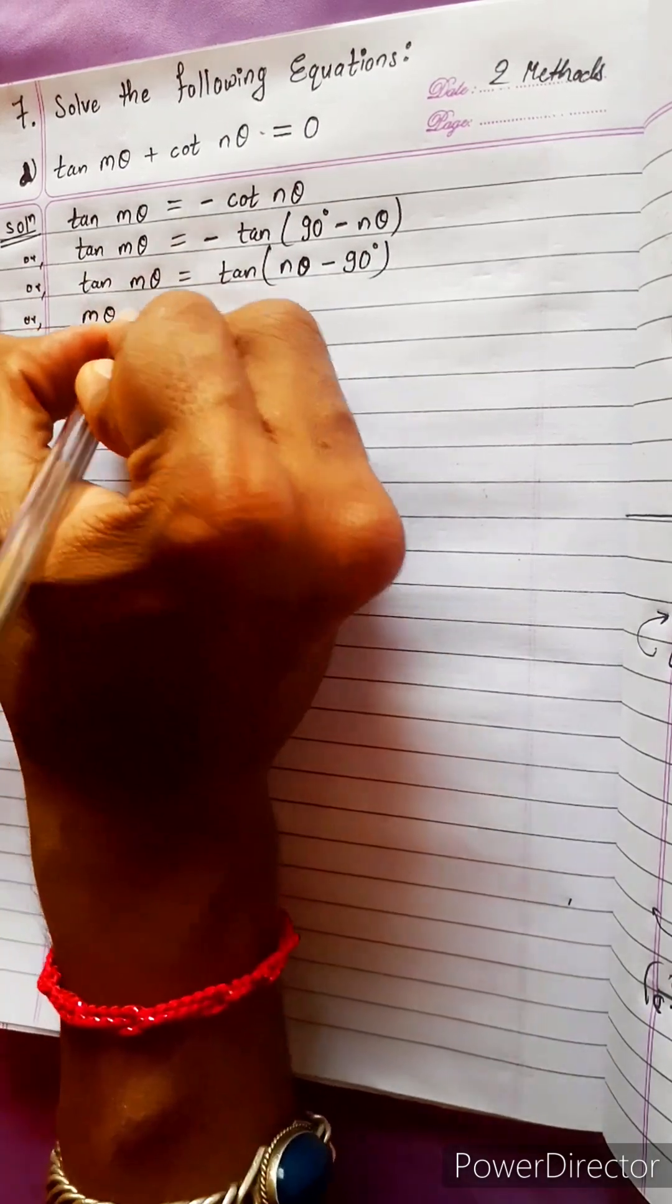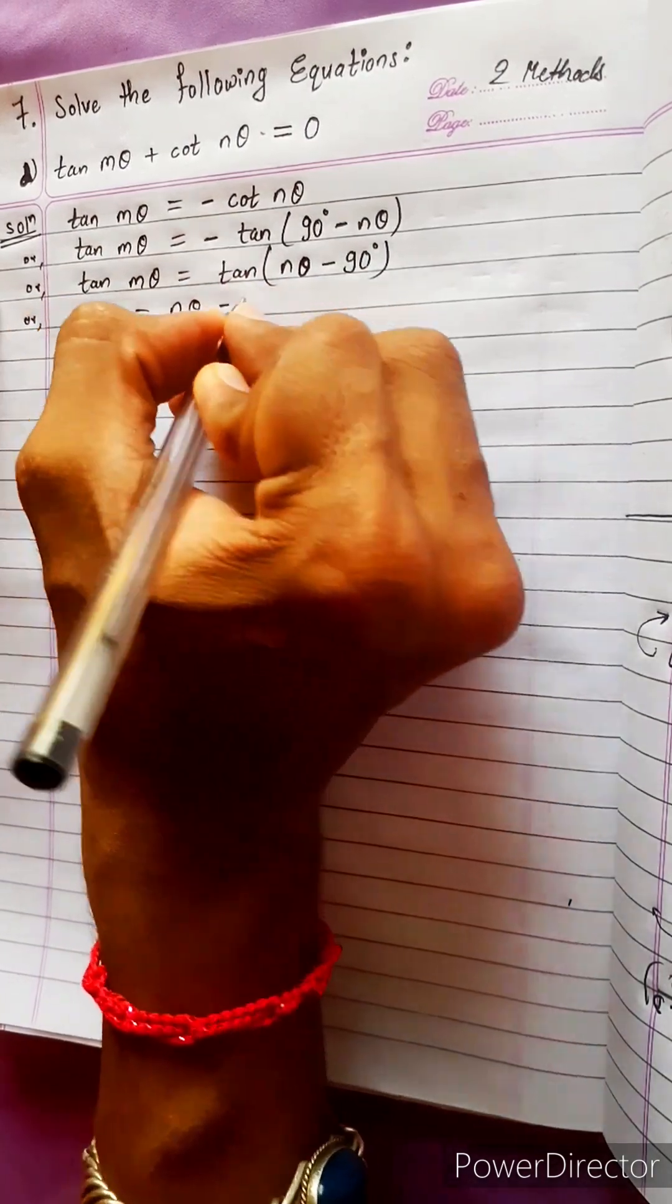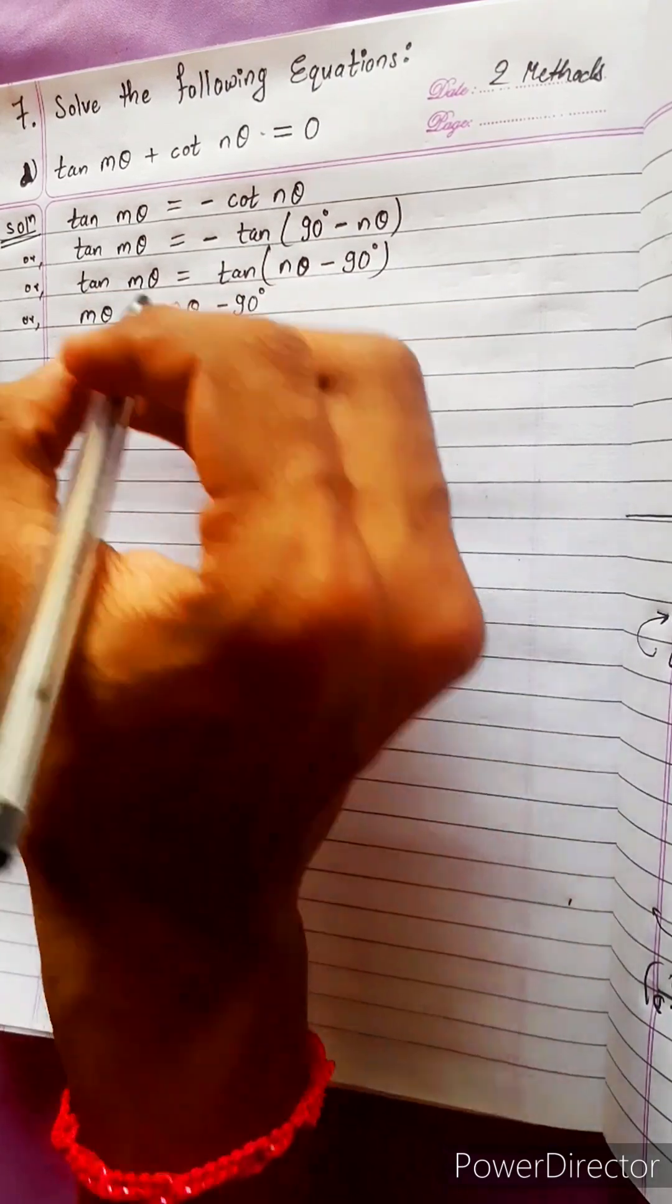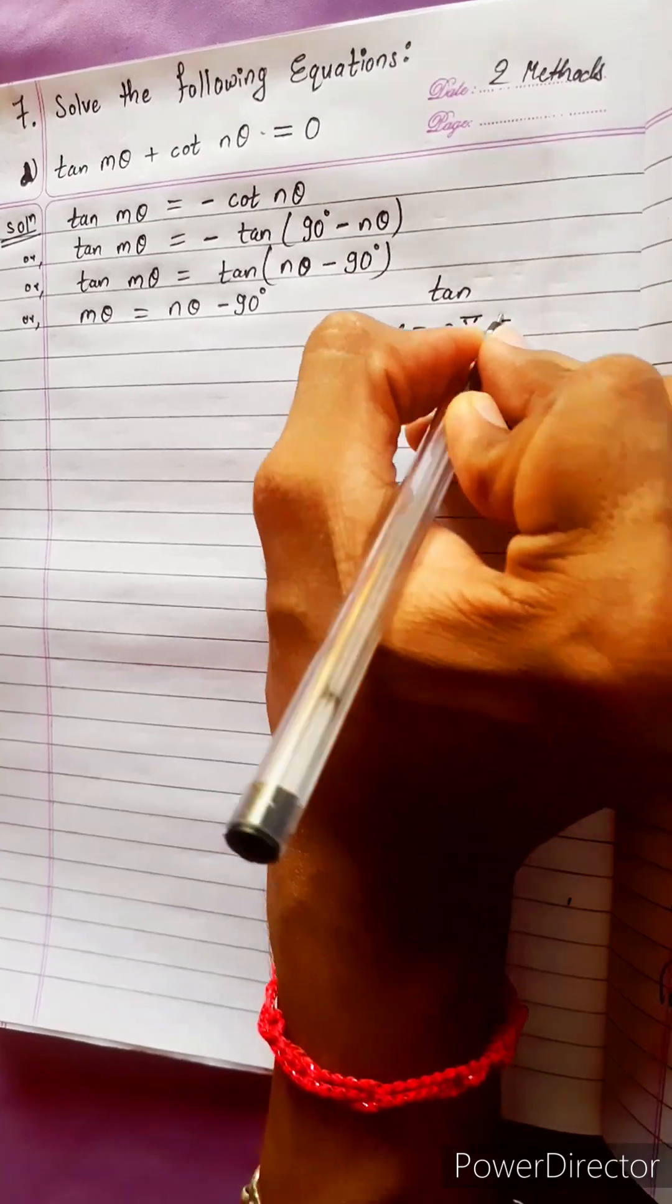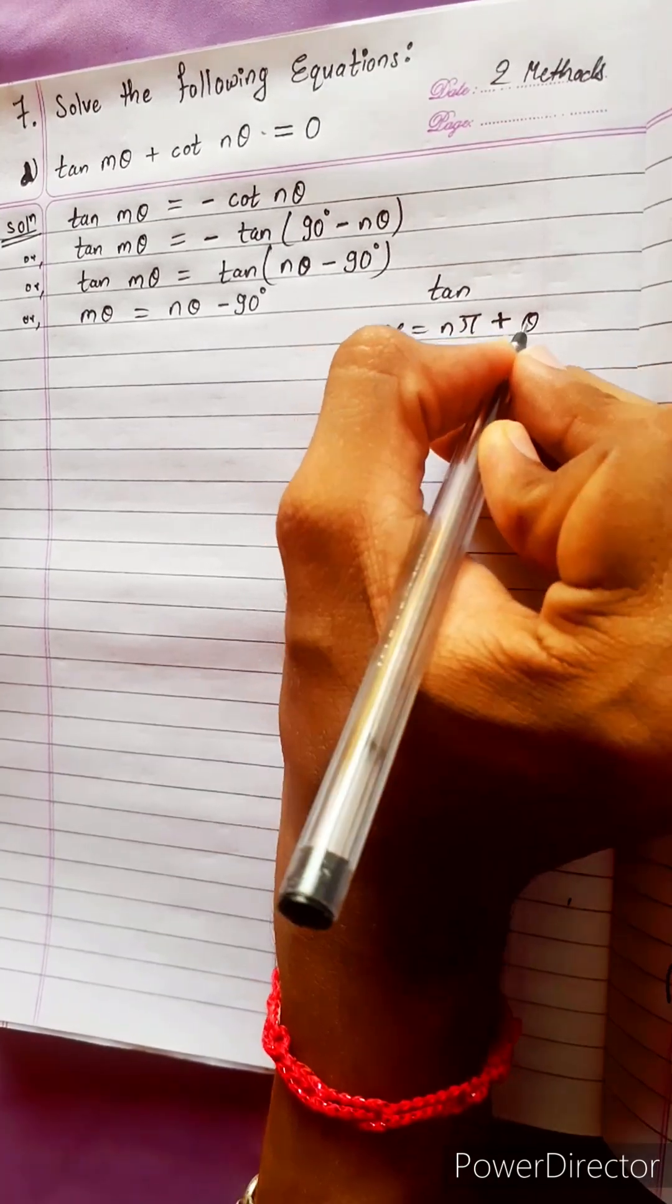Here we will get m theta equals to n theta minus 90 degree. This we got angle and formula for general solution of tan x equals to n pi plus theta, not plus minus, only plus theta.